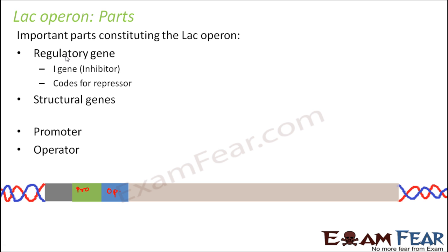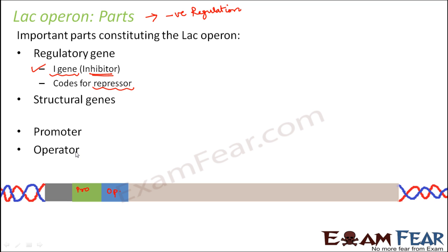The regulatory gene that produces the repressors here is the i gene, where i stands for inhibitor. Lac operon is an example of negative regulation — we have repressors, not activators. When the repressors bind to the operator region, the structural genes are turned off. The i gene codes for the repressor, and these repressors bind to the operator region.